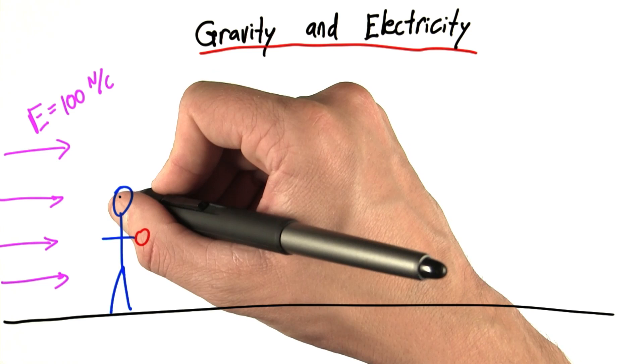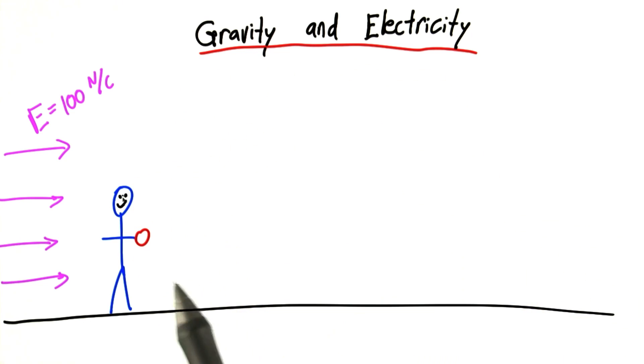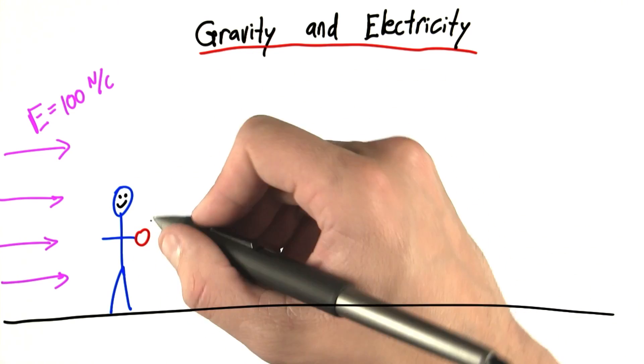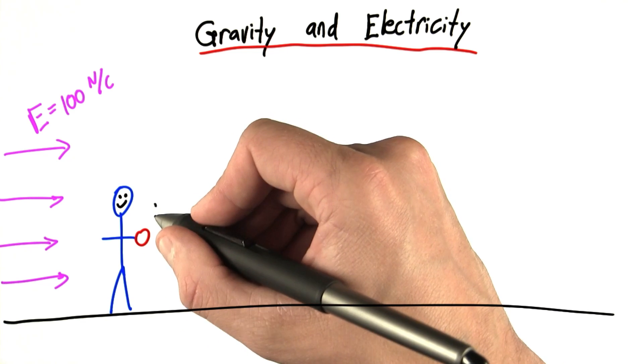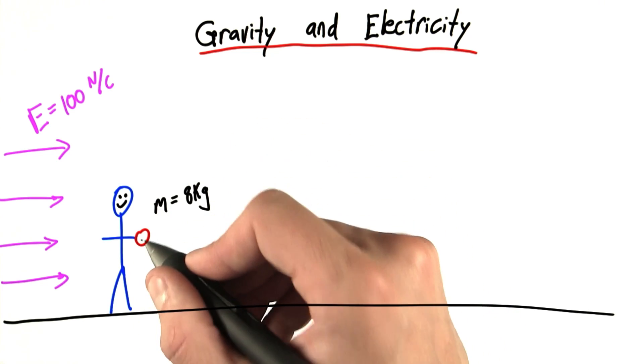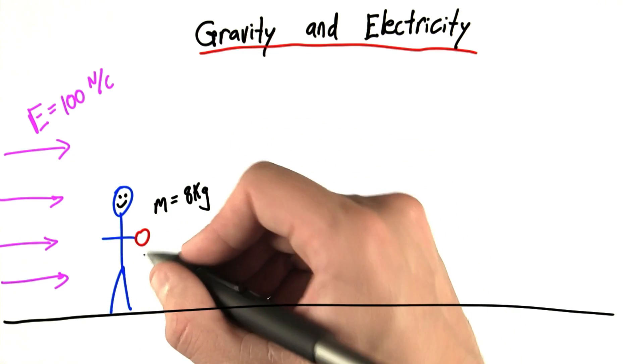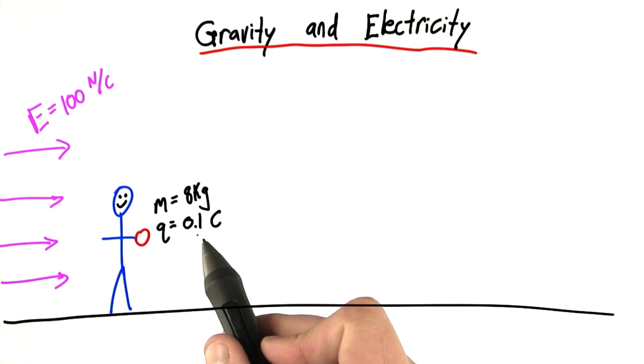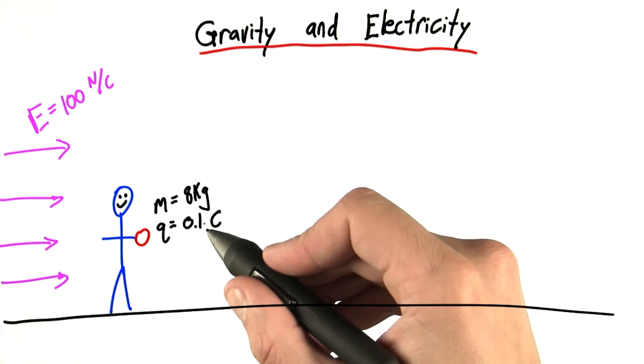Obviously Ben Franklin is very excited because he gets to do an experiment with electricity. Furthermore, let's say that this ball has both a mass of 8 kilograms, and it's actually charged as well. Its charge is 0.1 coulombs, and that's a positive charge.